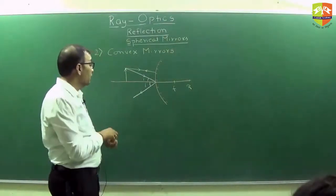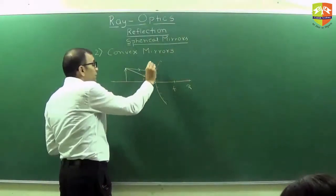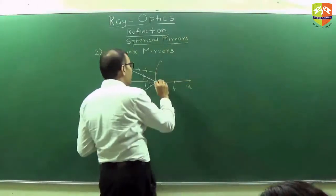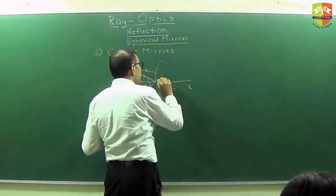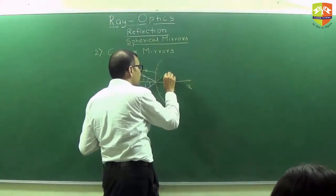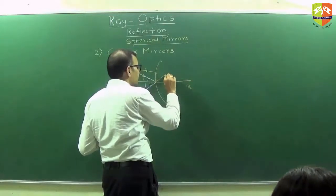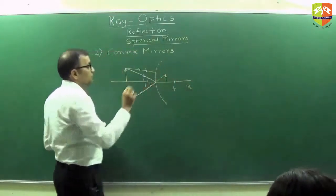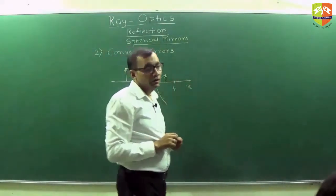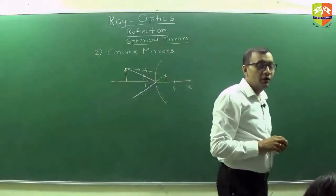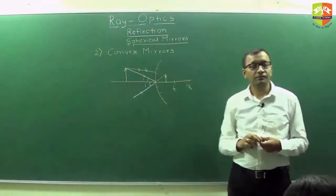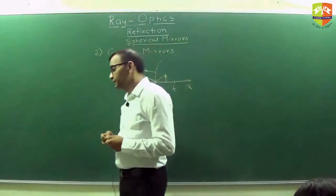So where is the image? Will these two rays ever meet — this one and this one? No, but they will appear to meet here, so this is the image. Is it real or virtual? It is a virtual image. Write down the characteristics of the image.